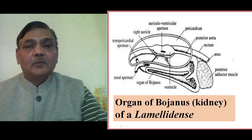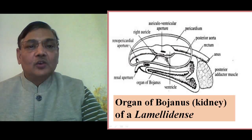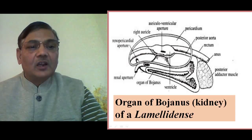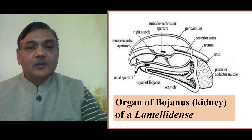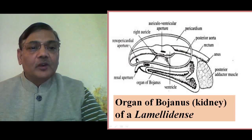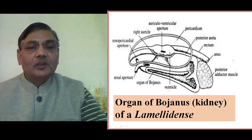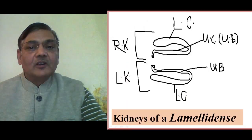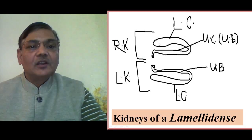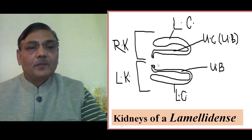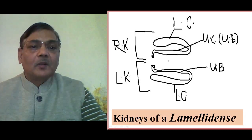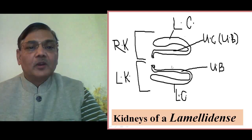The posterior side of the animal is visible because of the position of the posterior adductor muscles. Just below the pericardium is the position of the kidney. In Lamellidens and other bivalve animals, paired kidneys are present — right and left kidneys. One kidney is shown in the diagram. For a better understanding, a diagrammatic view shows the right kidney and left kidney located on either side of the pericardium, just below it.